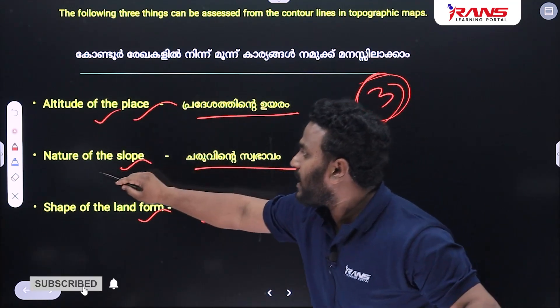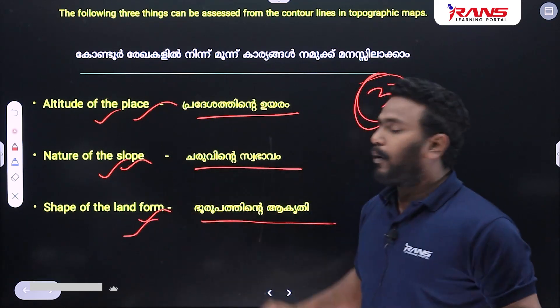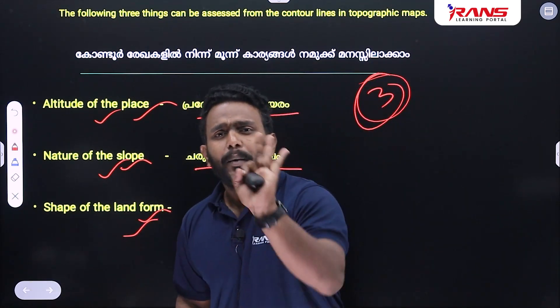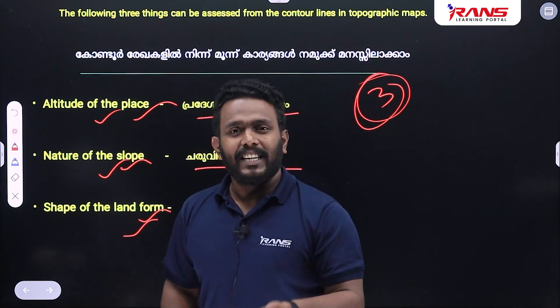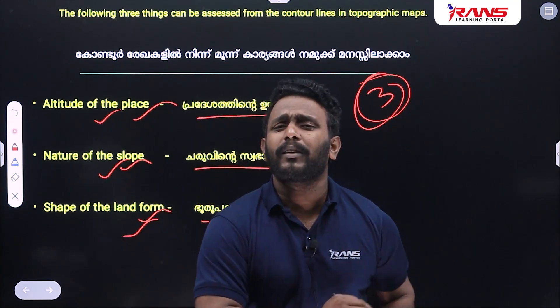To recap: the three things that can be accessed from a contour line are the altitude of the place, the nature of the slope, and the shape of the landform. These are worth one mark, one point, and one mark respectively.